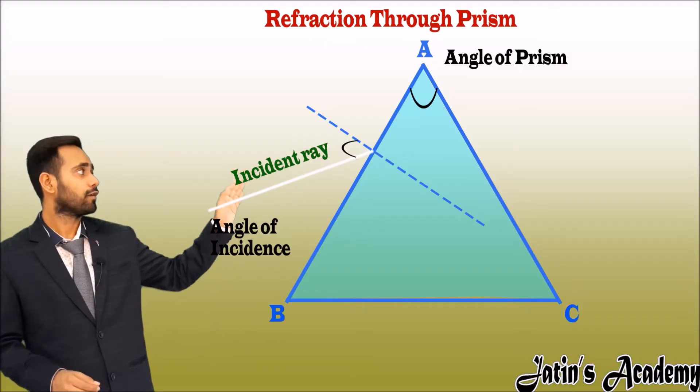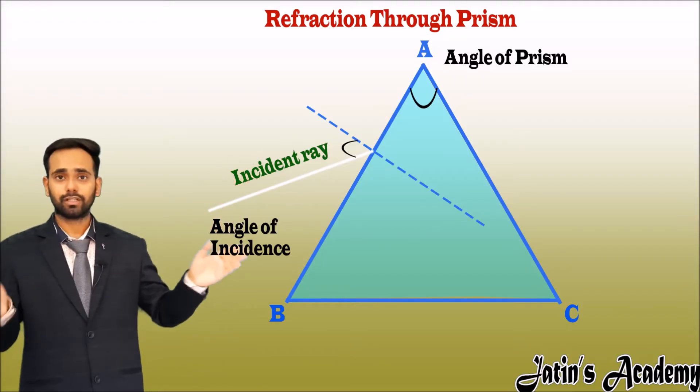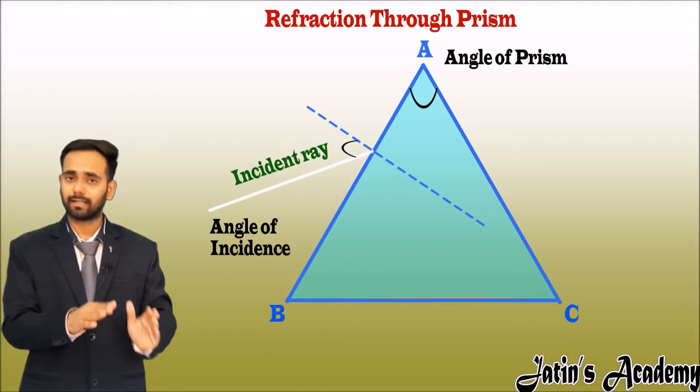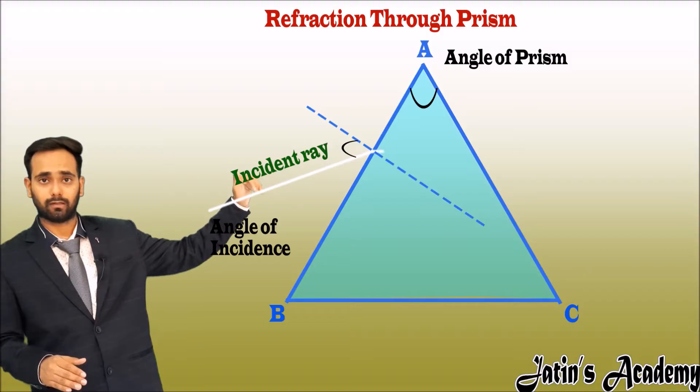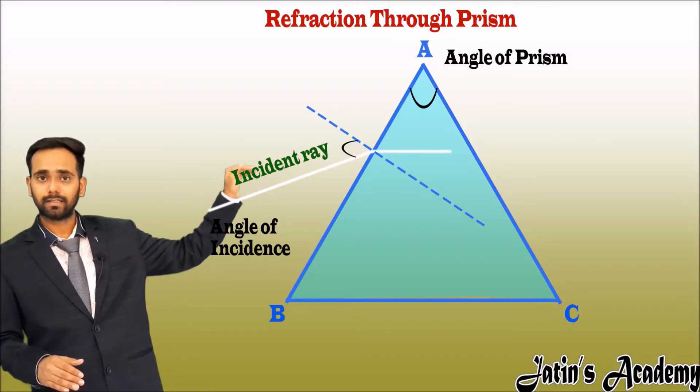Now this ray wants to go straight but due to the change in the refractive index, or we can say that glass is more denser than air, so the light bends towards the normal. After bending towards the normal, the ray is going straight.